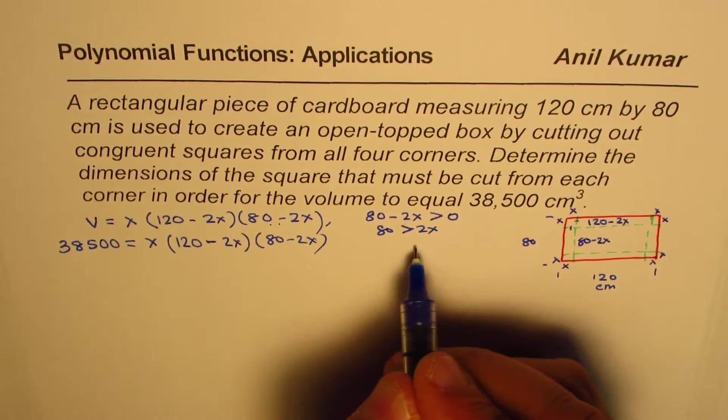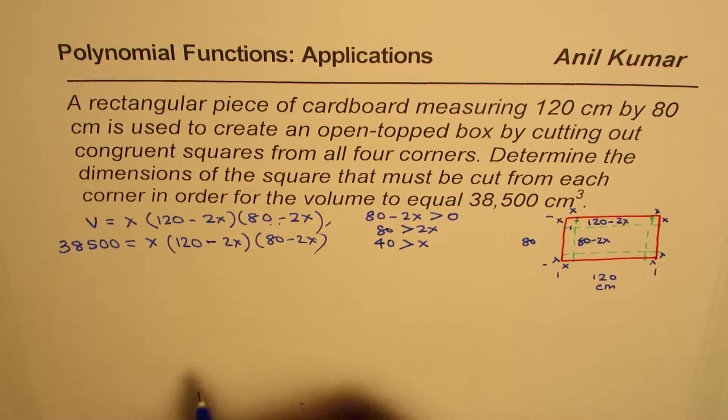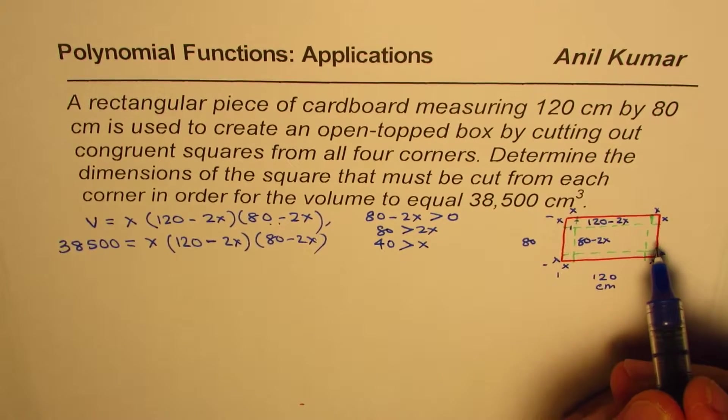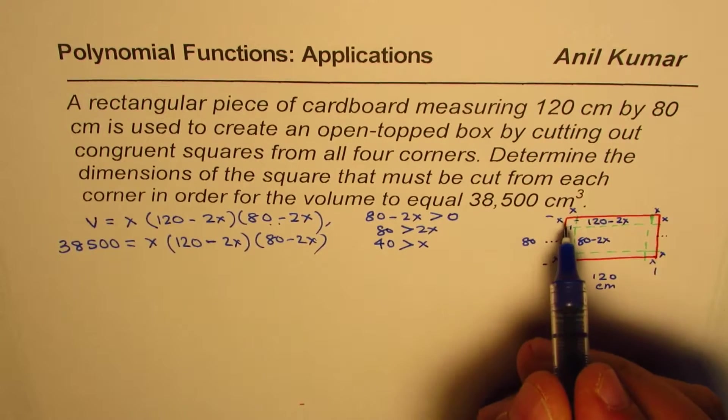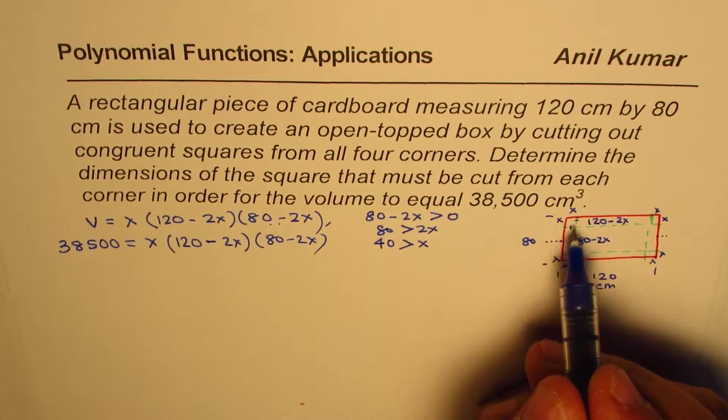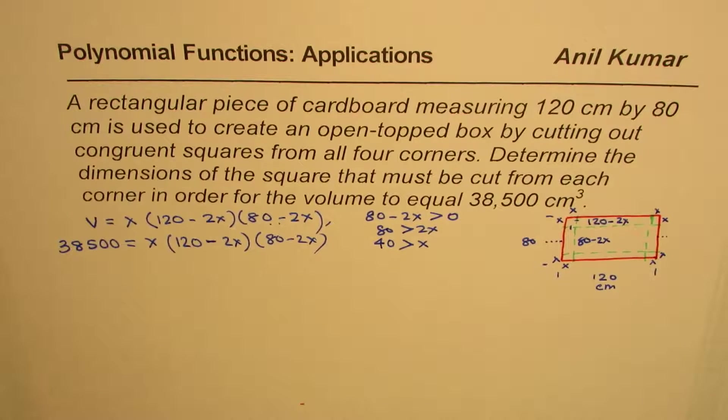Which you can also calculate by substituting like 80 minus 2X should be greater than 0. So that means 80 should be greater than 2X. And from here, we get X should be less than 80 divided by 2, which is 40. So the value of X cannot be more than 40. At the most, you can go midway and make a square. So that is the boundary condition for X. This is very important for us to look into.